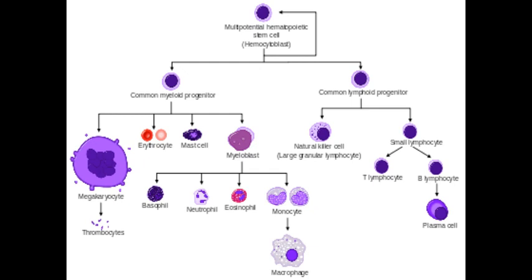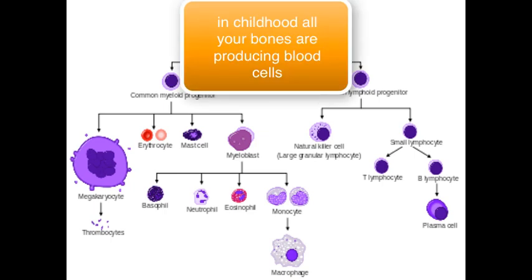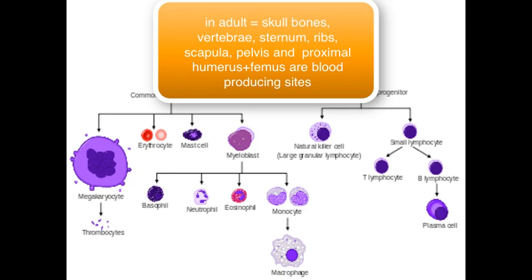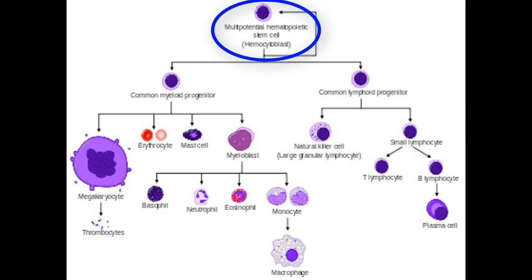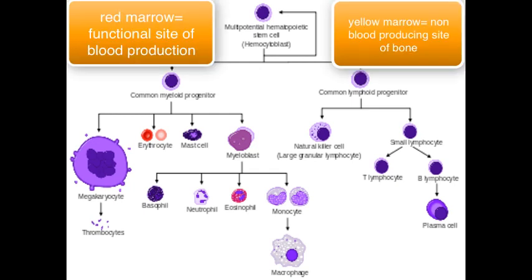So where do we get our cells? All of our cells are derived from stem cells. Stem cells are essentially blank cells — completely undifferentiated — and as they differentiate, they mature and become very specific in their function. When it comes to blood cells, we have our hematopoietic stem cells, found in the red bone marrow of all bones during childhood. In adults, active red marrow is found in the skull bones, vertebrae, ribs, sternum, scapula, pelvis, and the proximal portions of the humerus and femurs, while the rest of the bones convert into fat called yellow marrow.